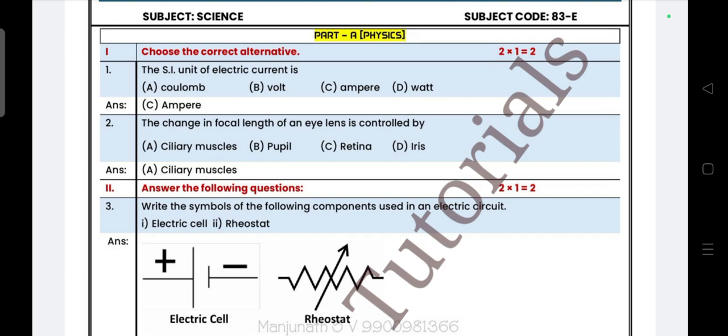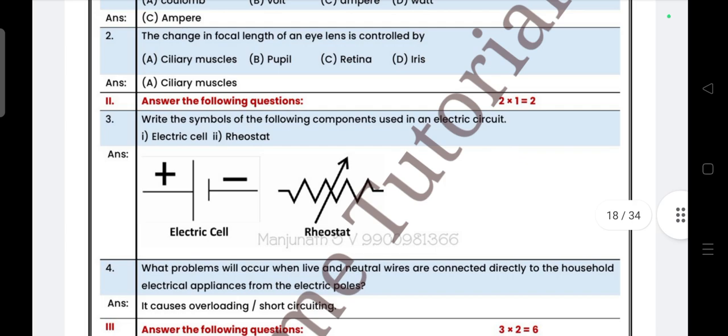Let's get started. First main part is physics. First one, SI unit of electric current is, answer is C, ampere. The change in focal length of an eye lens is controlled by, answer is ciliary muscles.